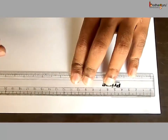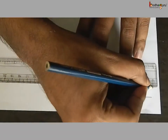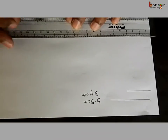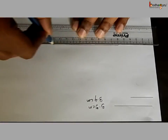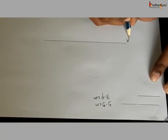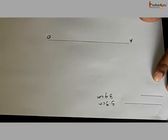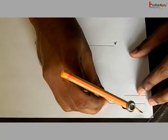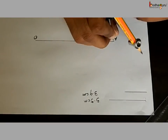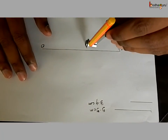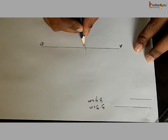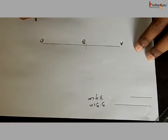We draw the line segments of the given lengths using a ruler. As we have decided to make 5.5 cm the base, we draw a ray longer than 5.5 cm and name it AO. Take a compass with a sharp pencil attached to it and measure 5.5 cm. Put the needle on point A and cut off 5.5 cm on the ray, marking point B. So AB is 5.5 cm.